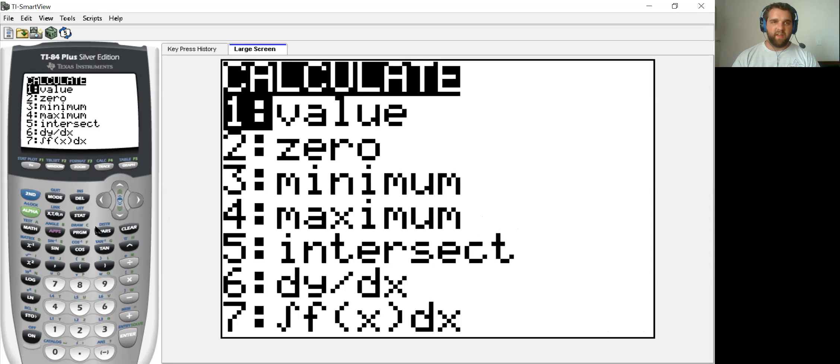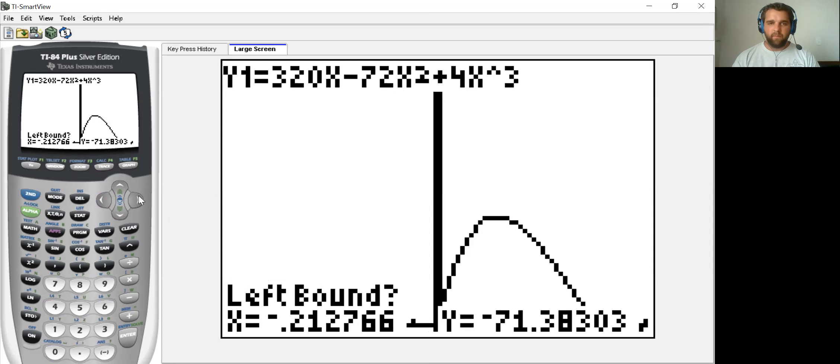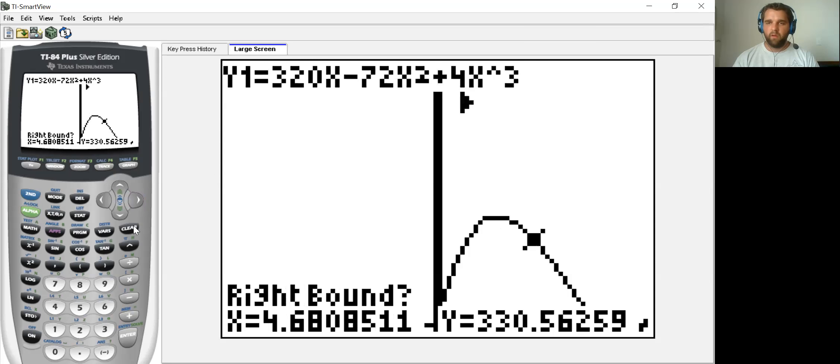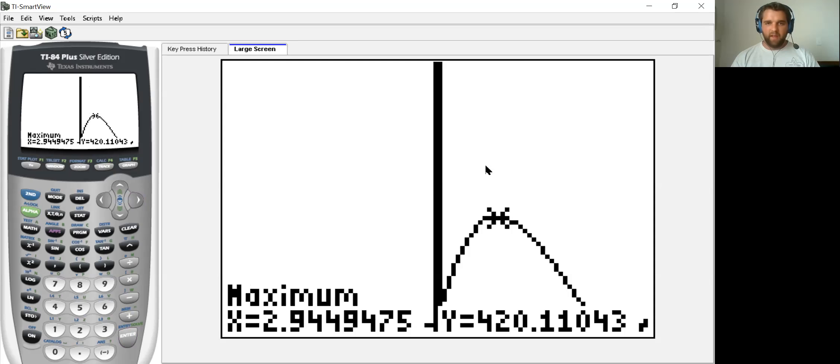So we can now see our maximum point is going to be right here in this area somewhere. So we can go second, calc, find the maximum point, and we need to click at some point to the left of the top. So we're currently to the left of the top. We need to go to the right of the top, hit enter, and then we'll hit enter once more. And our top is, when we cut out about 2.95, about 2.9 and a half, you could even round it to about three. And that's going to maximize the amount of volume.